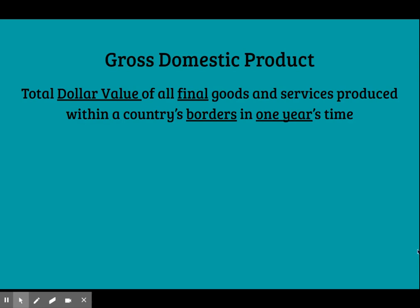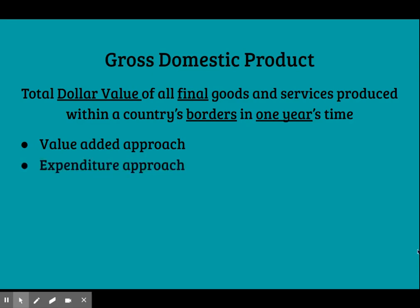There are three ways to calculate GDP. The value-added approach surveys firms and adds up the total value of the production of final goods and services in a year. The expenditure approach adds up all the spending on domestically produced final goods and services by the four spending sectors of the economy: consumers, producers, governments, and foreign buyers. This is by far the most common method of calculating GDP, and it will be the one that we focus on the most in this section.